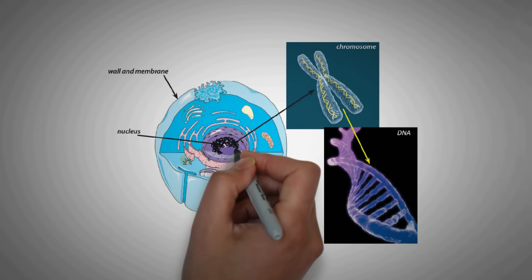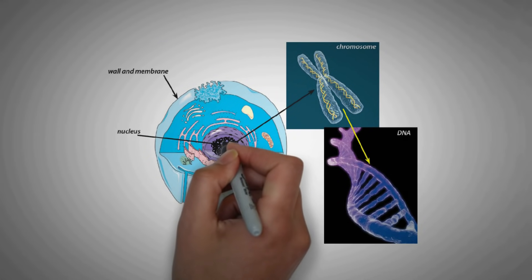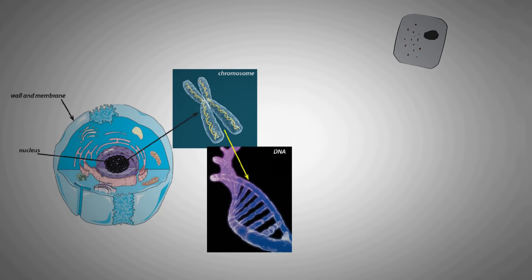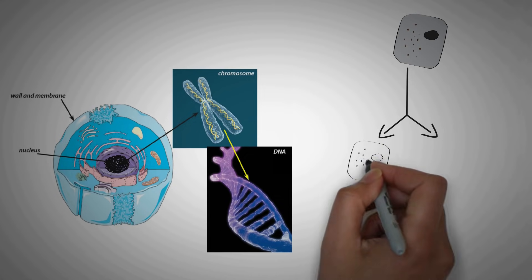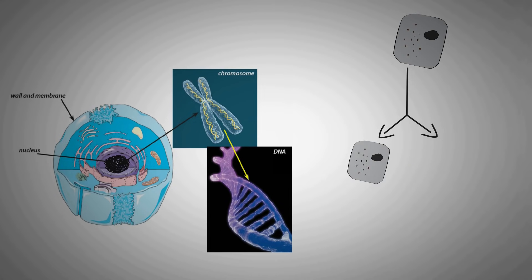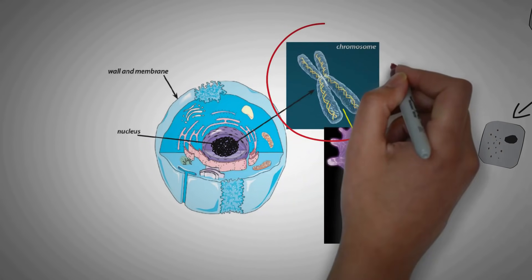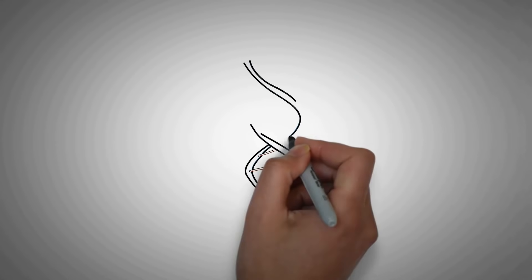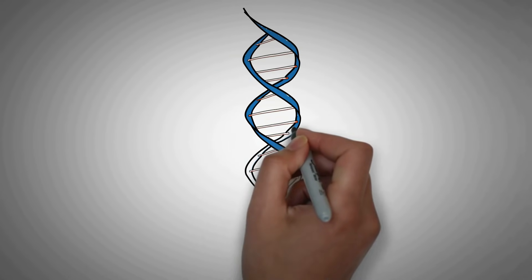Now for most of the life cycle of the cell, the DNA is located inside the nucleus like a coiled noodle. But during the time when the cell replicates, the DNA is arranged in the form of structures known as chromosomes, and these chromosomes help to keep the DNA stable during cell replication.